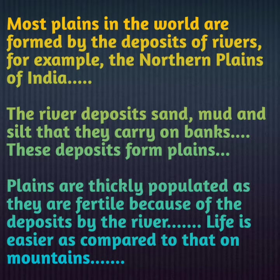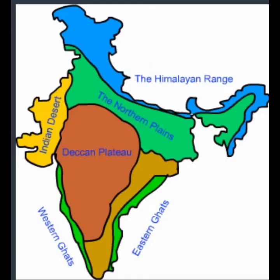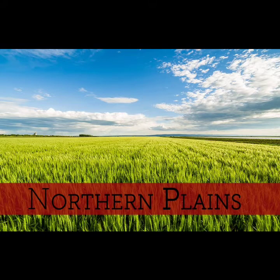The northern plains of India include the regions of Haryana, Punjab, Delhi, Uttar Pradesh, Bihar, etc. What you are seeing in green color at the top — this is the northern plain of India. This region is generally very green; here you will find many forests and vegetation. The land is very fertile, that is why different types of crops are grown here.